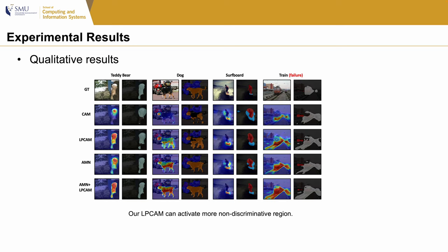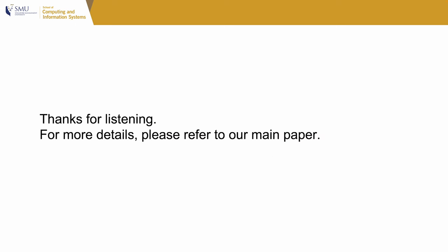The qualitative results show four examples, including one failure case. For the teddy bear and the dog, our LPCAM can activate more non-discriminative regions like the body. For the surfboard example, our LPCAM successfully removed false positive water regions. For the failure case, due to the co-occurrence of train and railroad, our LPCAM mistakenly merged the railway and the train. Thanks for listening — for more details, please refer to our main paper.